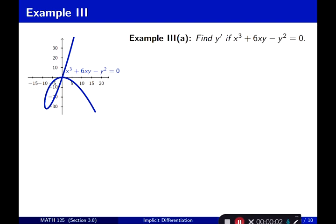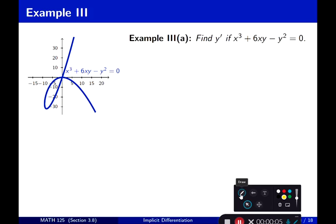We're continuing with Section 3.8, and this time with examples. Example 3, Part A: find y prime if x cubed plus 6xy minus y squared equals 0. Notice this is an implicit function, so let's take the derivative of it.